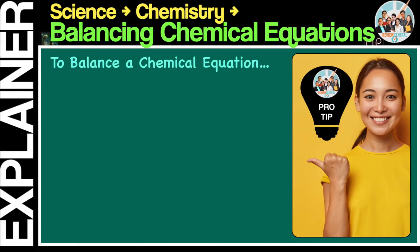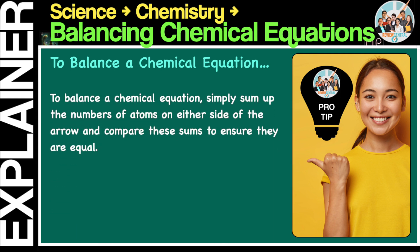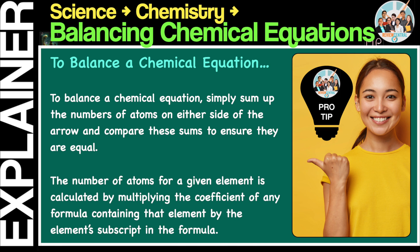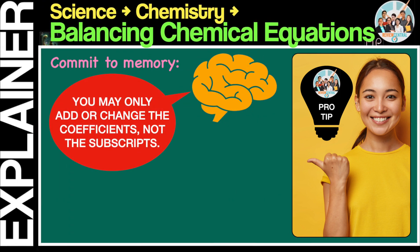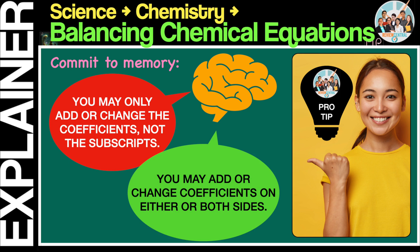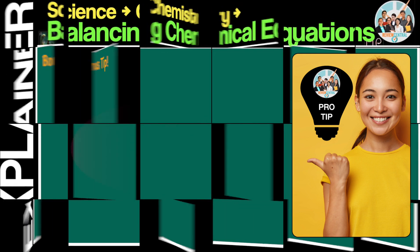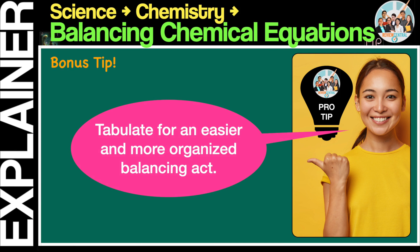Here's Review Central's pro tip on how to balance chemical equations. To balance a chemical equation, simply sum up the numbers of atoms on either side of the arrow, and compare these sums to ensure they are equal. The number of atoms for a given element is calculated by multiplying the coefficient of any formula containing that element, by the element subscript in the formula. Commit these to memory. You may only add or change the coefficients, not the subscripts. You may add or change coefficients on either or both sides. Bonus tip, tabulate for an easier and more organized balancing act.